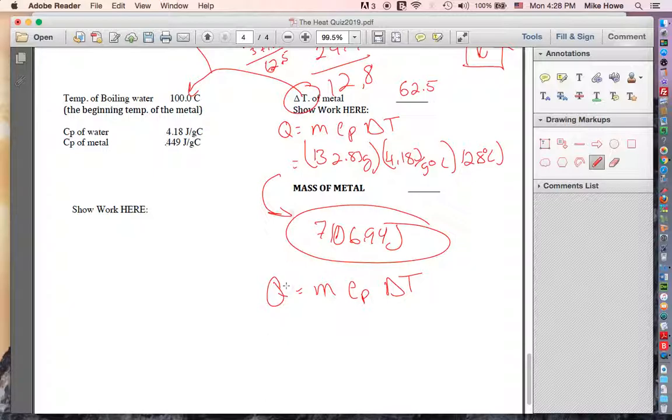The Q of the metal is the same as the Q of the water, which is that number. So 7106.94. The mass of the metal is what we're trying to find. Heat capacity of the metal, we know that. And then the change in temperature of the metal, we calculated that right here. So that's 62.5. Now to do this math, you'd have 0.449 times 62.5, 28.0625.